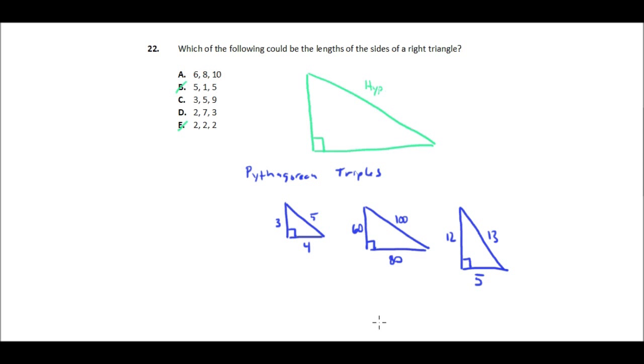They really are some multiple of 3-4-5 or the 5-12-13. So as you probably guessed or saw, the answer choice here is A.